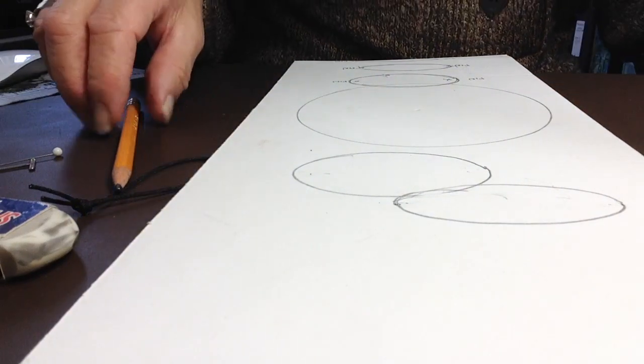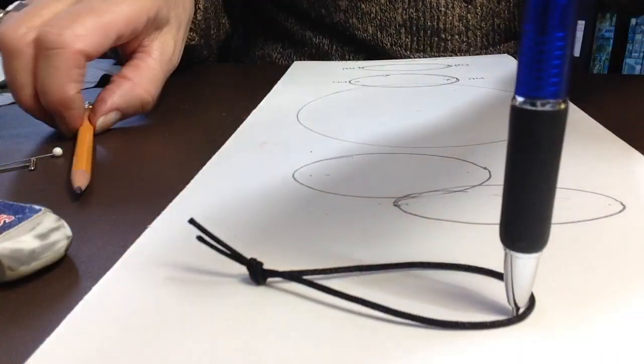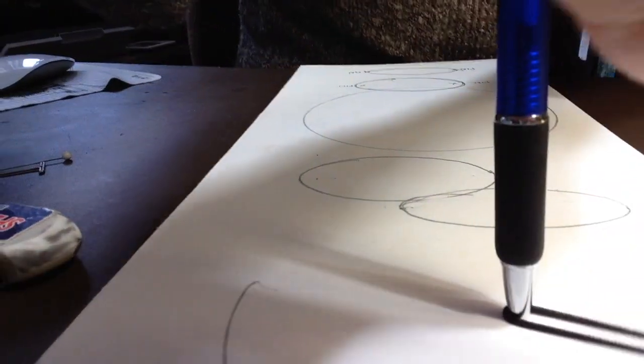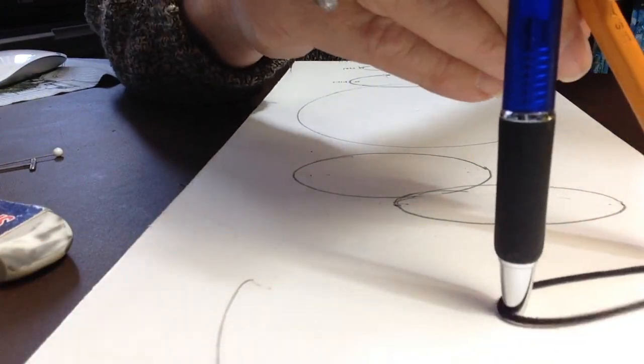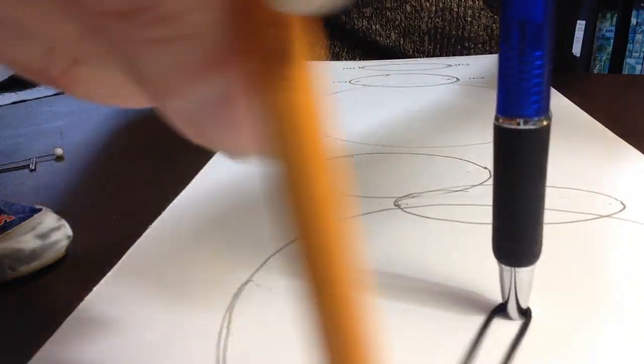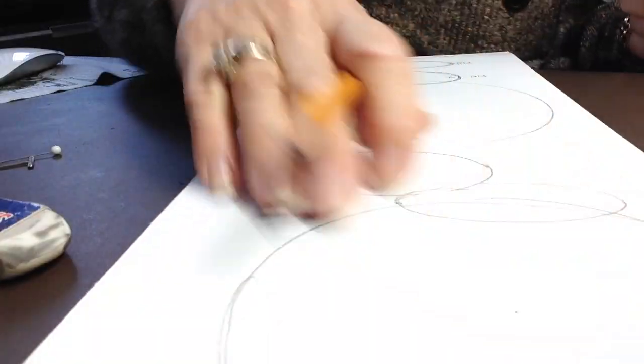If you want to make a full circle, you just put a pencil here, and go all the way around. As long as you don't move the middle pencil, you get a full circle.